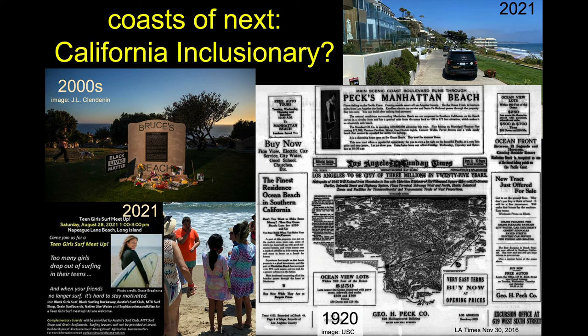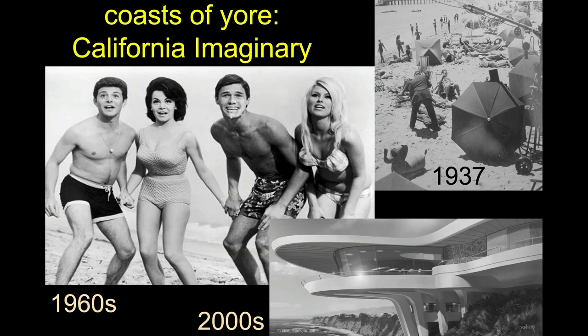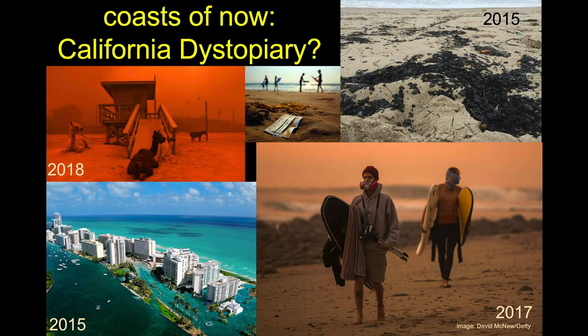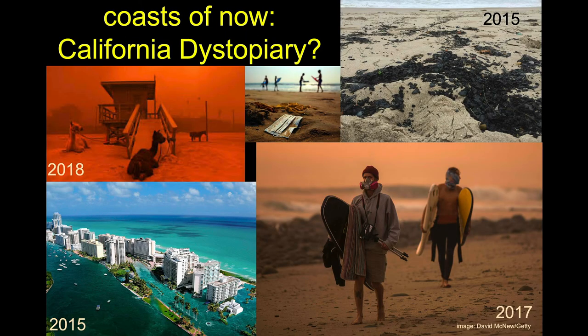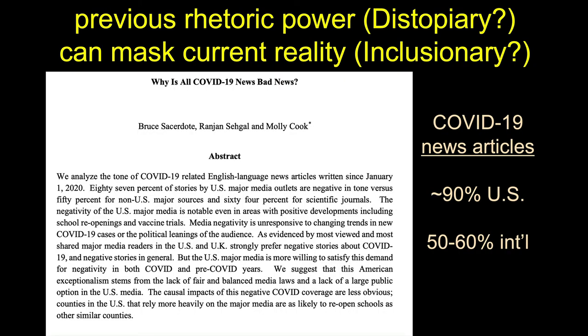We're seeing more of that push, even though we have a long stretch to go. In review: we have the coastal imaginary, these rhetorical approaches are still present, they're not gone. We start with the coastal imaginary, we're in the dystopiary, and we're just beginning to enter the inclusionary.